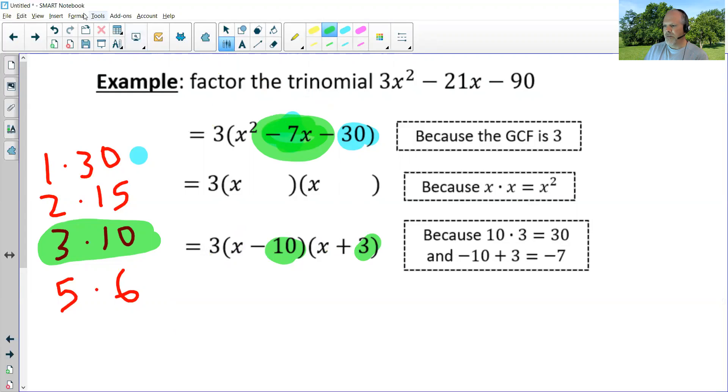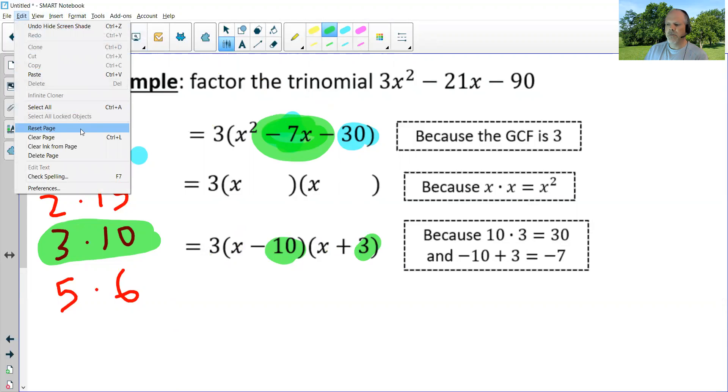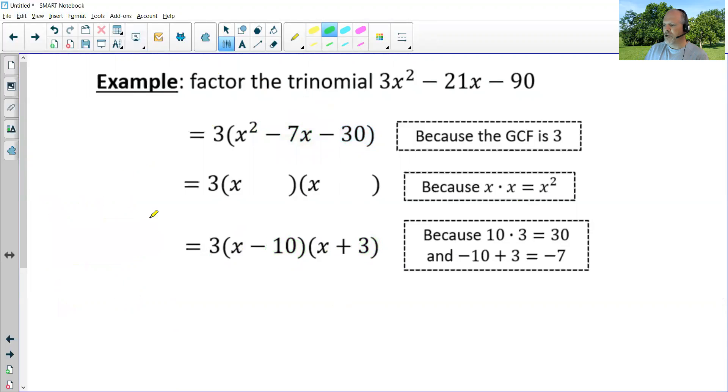And when you multiply it out, you should get the original polynomial. So let's do that once. If I multiply out the two binomials, I'll do this three later. But I'll do first times first, x squared. Outside times outside is x times three, which is plus 3x. Inside times inside is negative 10x. Last times last is negative 30.